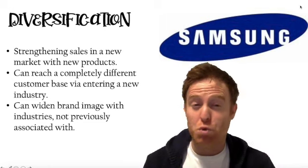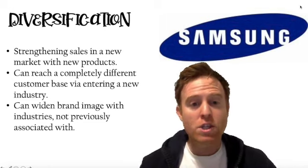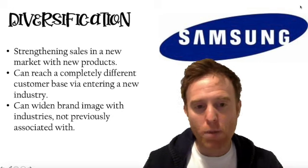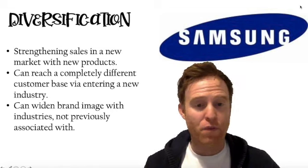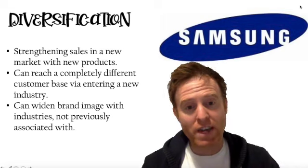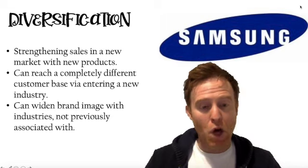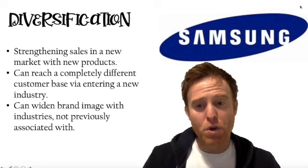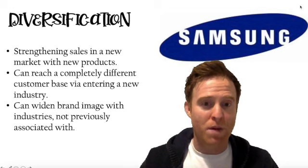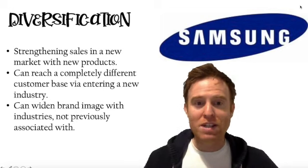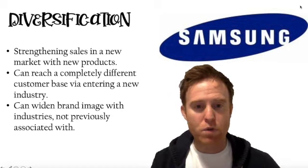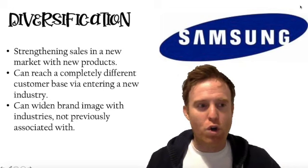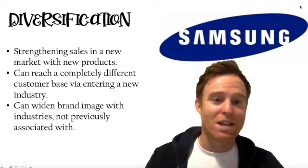The final strategy is probably the most risky — it is the high-risk strategy of diversification. Just like conglomerate integration was the most risky form of external growth, diversification has similar characteristics. With diversification as an organic growth strategy, a company is developing a brand-new product in a completely different market — that's where the risk lies. Not only do you have to carry out market research into the market, but also research and development into the new product. But if done successfully, it can completely revolutionise your revenue streams, bringing in a completely new revenue stream from a different customer base.